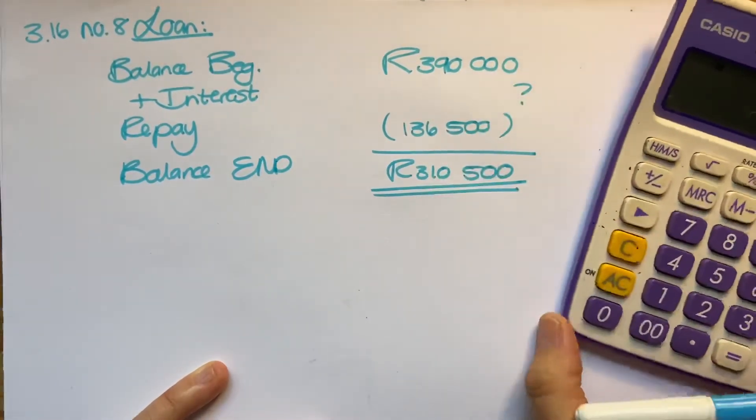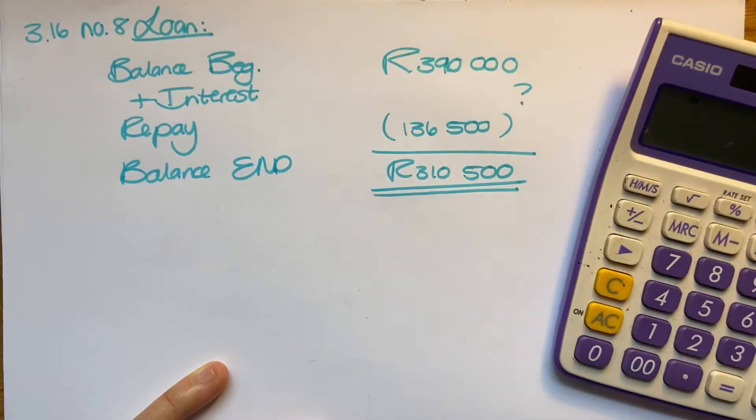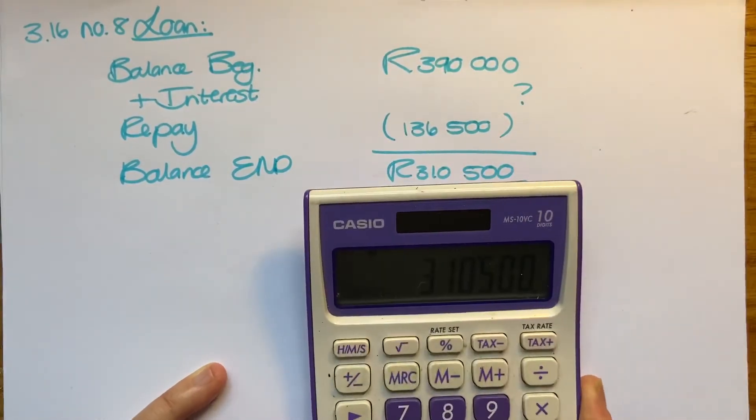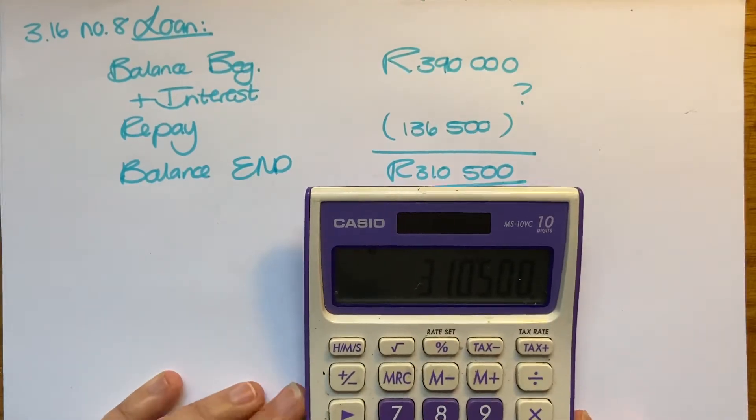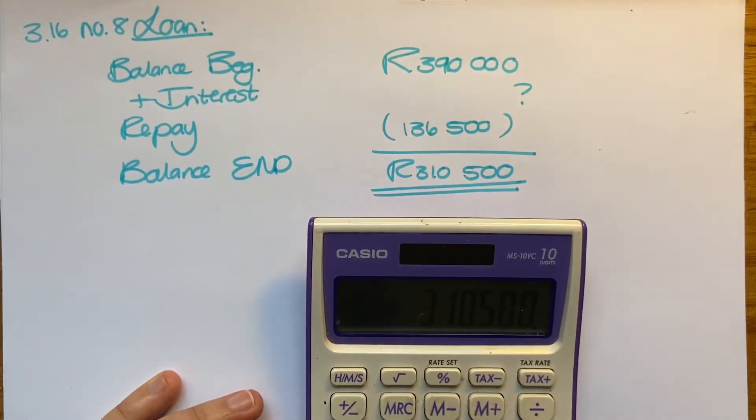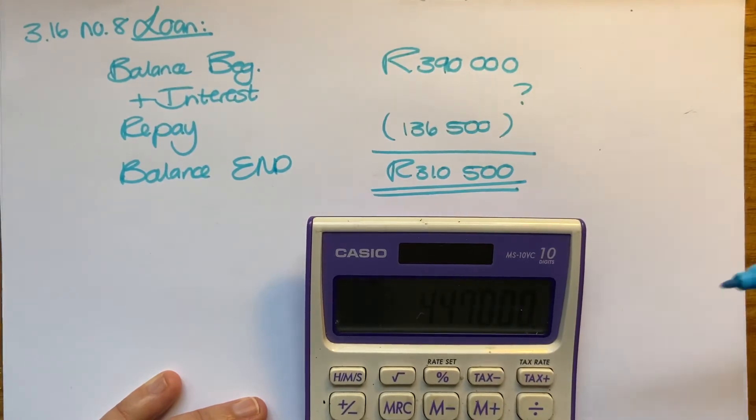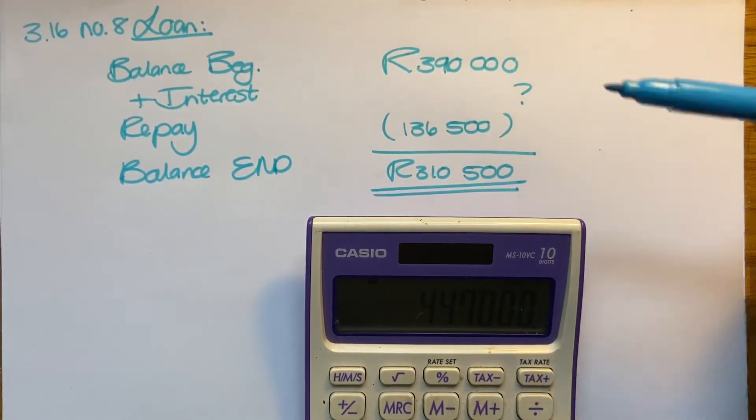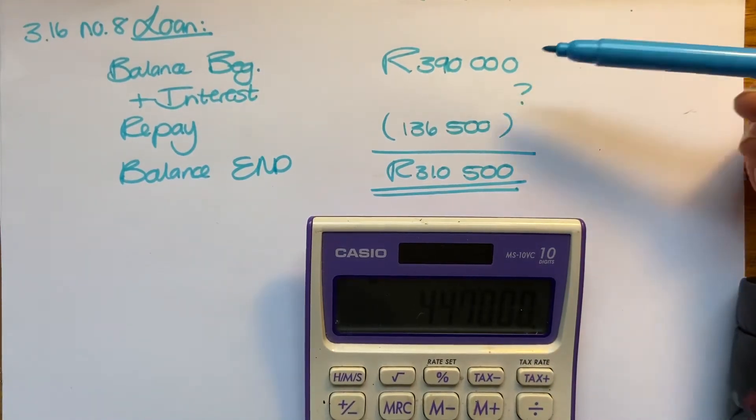I would enter that to my calculator, and then I would add plus 136,500. That means I had 447,000 there before I repaid it back. But I knew I only owed in the beginning 390.